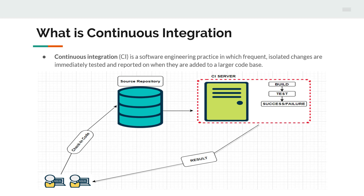Once that code is pushed and updated in the repository, the CI server will pull that change and start running it. There are two parts of execution that will be performed: the continuous building activity and the continuous testing activity. As part of the build activity, we will use build tools like Maven or Gradle to accomplish this step.